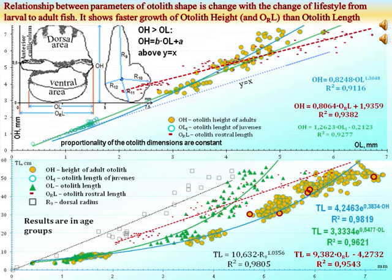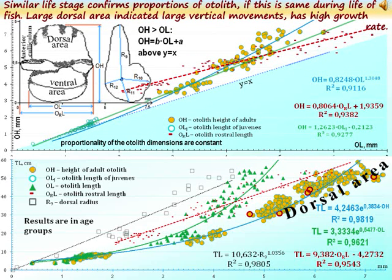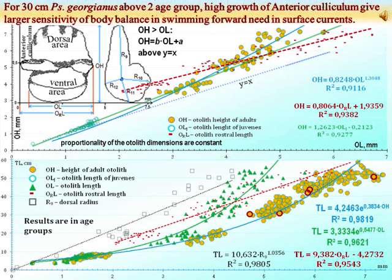The relationship between otolith shape parameters changes with the shift of lifestyle from larval to adult fish, showing faster growth of otolith height and otolith rostrum length than otolith length. Large dorsal area indicating large vertical movements has a high growth rate. For 30 cm Georgianus above age group 2, high growth of the anterior colliculum gives larger sensitivity of body balance in swimming forward through median surface currents.